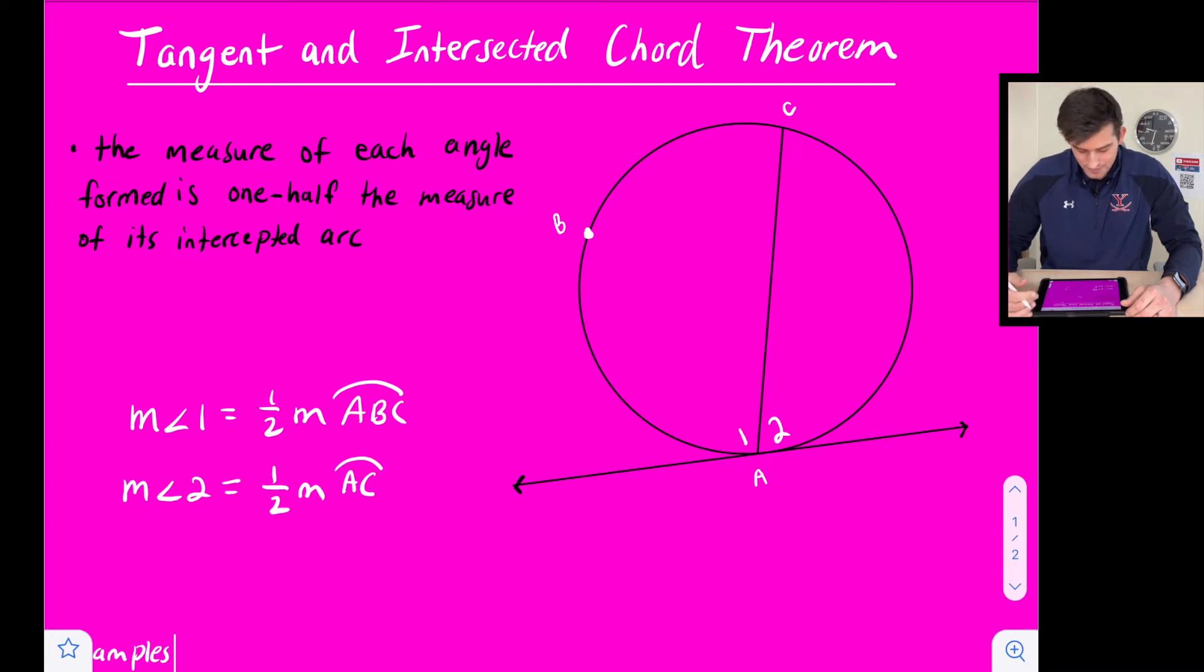So now measure of angle one it tells us is just half of the measure of the major arc ABC. So our major arc would be this arc here and our angle one would be half of that major arc measure.